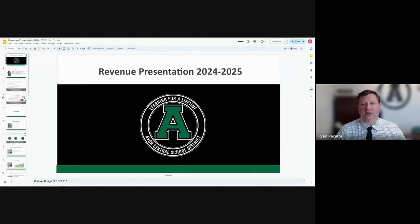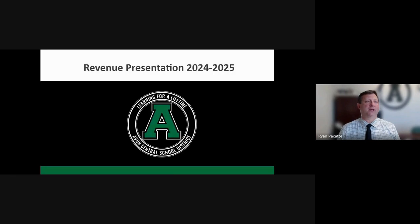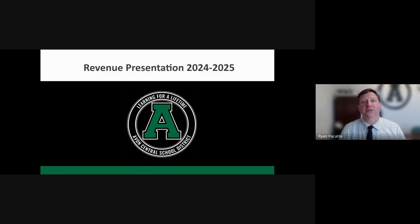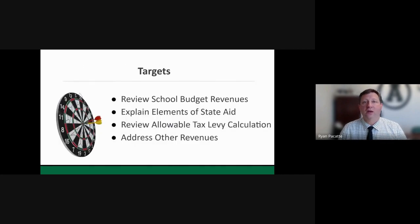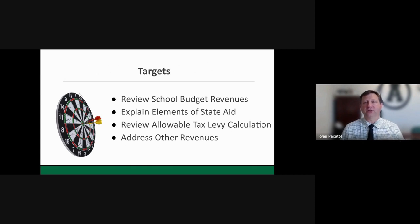I'm going to share my screen and begin the presentation that is going to look specifically at the revenue sources for the annual school budget. This is not the overall budget presentation, although I will touch upon some of the elements involved in this year's budget. This is really to focus on the revenues — the monies that come in that comprise the school budget. We're going to look at all three major revenue buckets, explain elements of state aid, review the allowable tax levy calculation, and address other forms of revenue including revenues from pilot agreements within the community.